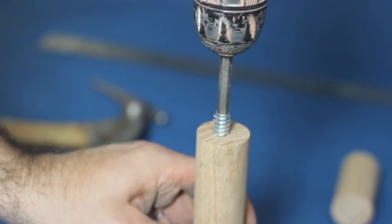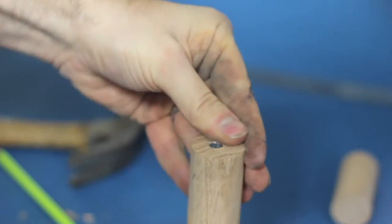Using a number six hex bit, screw both insert nuts into both sides of the long dowel.